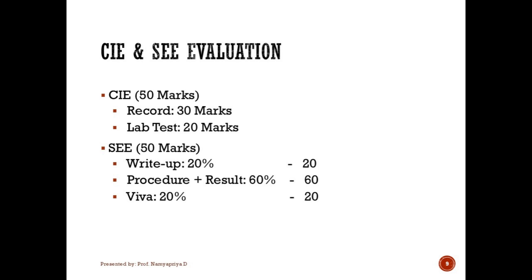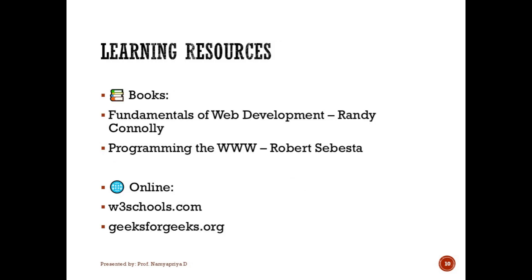The semester end exam or SEE is also for 50 marks. It includes evaluation of write-up, experimentation execution, and viva voce. Students must secure a minimum of 40 marks in total to pass. The SEE is conducted for 100 raw marks and scaled down to 50.